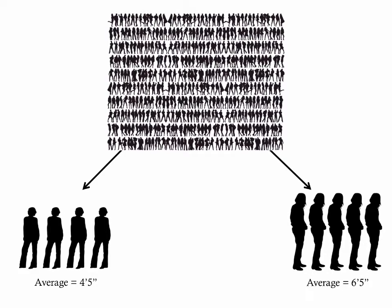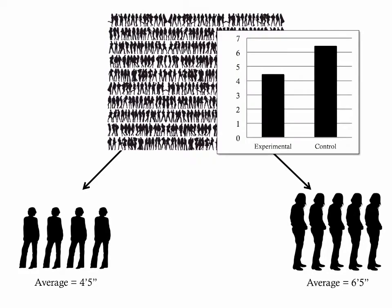This is a big problem because before the experiment has even begun, you've now got a very big difference between the groups just because of your biased selection — the biased assignment in the way that you put people in each group.